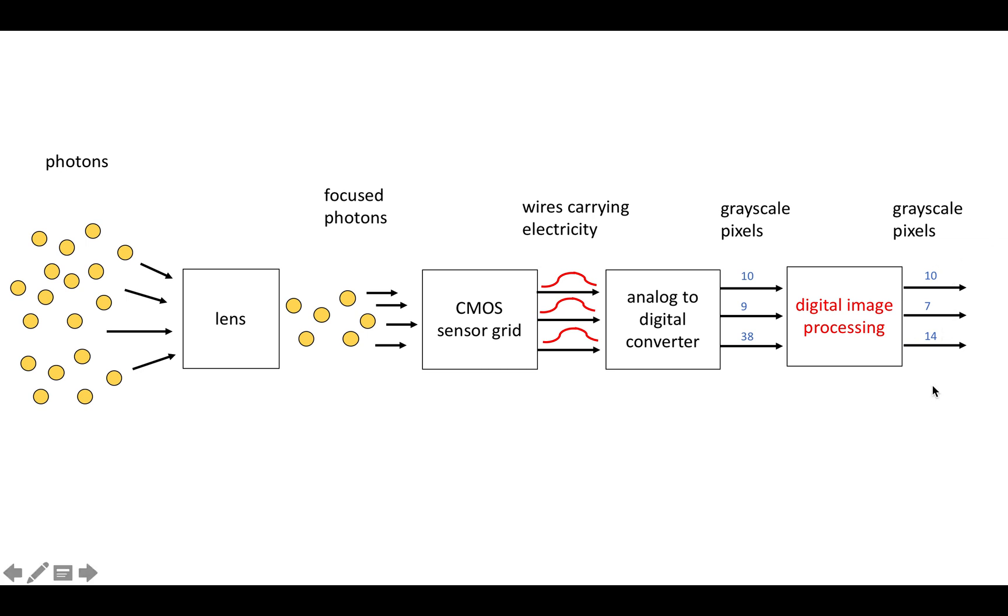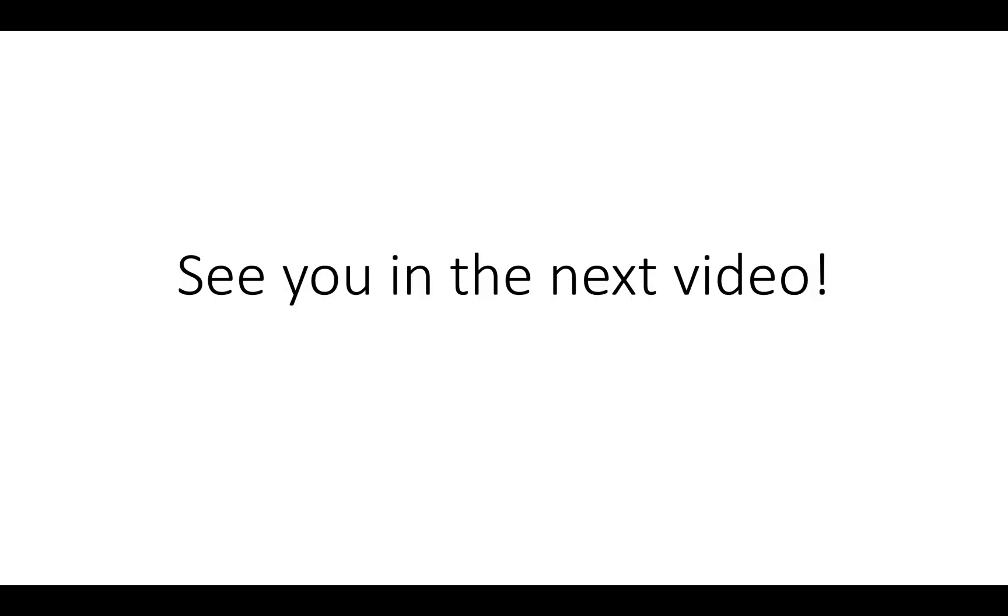So we're going to get some extra pixels out. For example, here we've changed the value slightly. So 38 has been corrected down to 14, and maybe 9 has been adjusted slightly to 7. So in subsequent videos, we're going to talk about the processing steps involved in a very simple digital camera pipeline, and how they're implemented in hardware, and why they're good candidates for implementation in hardware. So I'll see you in the next video.